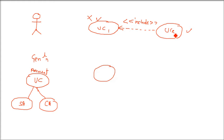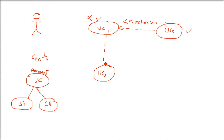Extend is different. UC2 is called every time, but UC3 is only called when it is required — not every time. UC2 always runs, but UC3 only runs when UC1 requires it or a certain condition forces UC1 to call UC3. Otherwise it is not called. That is the extend relationship.